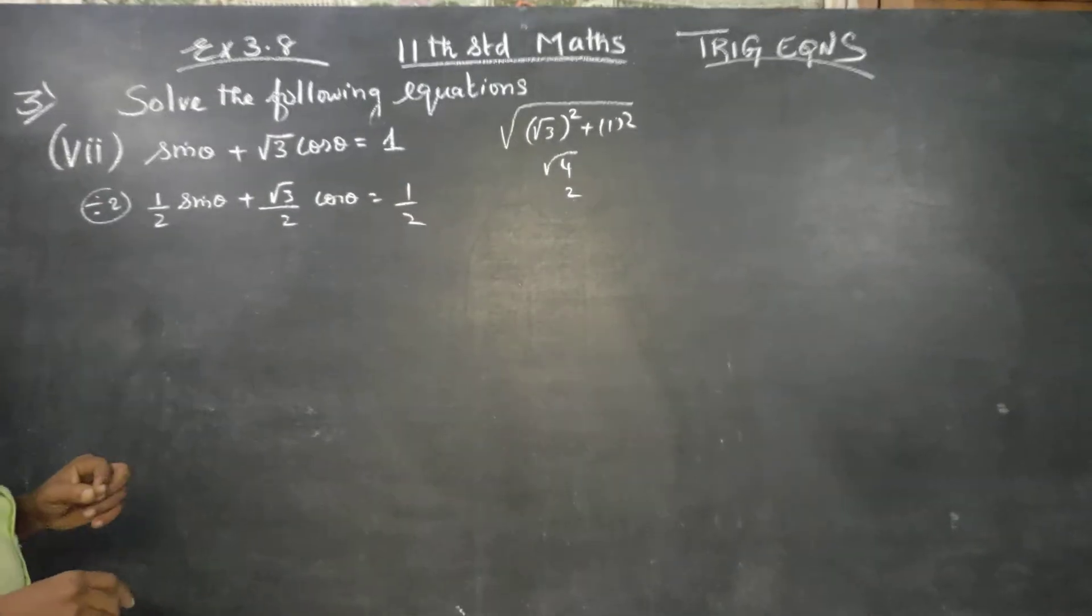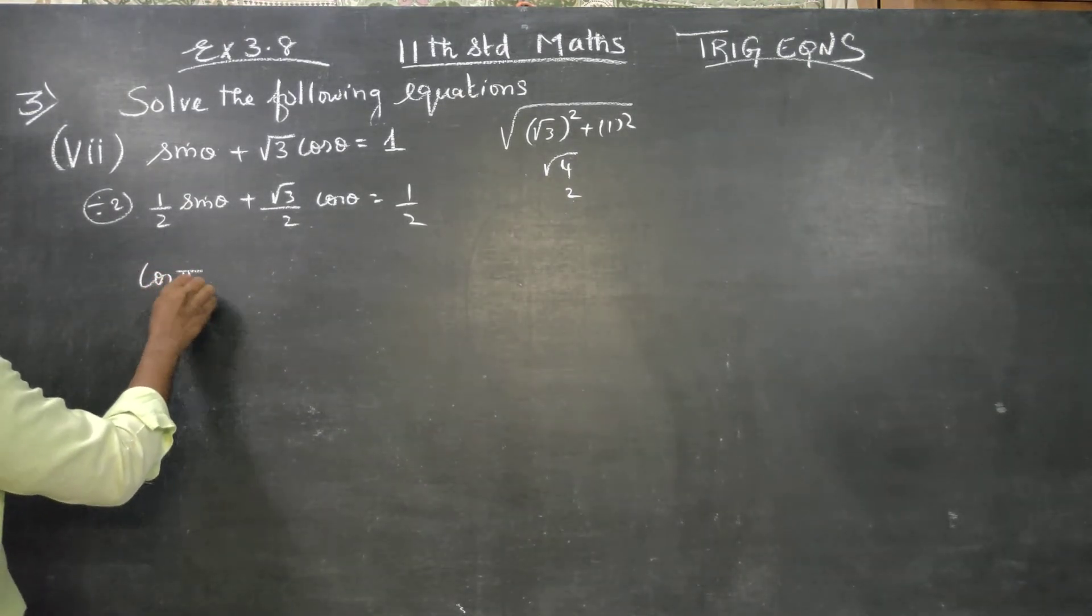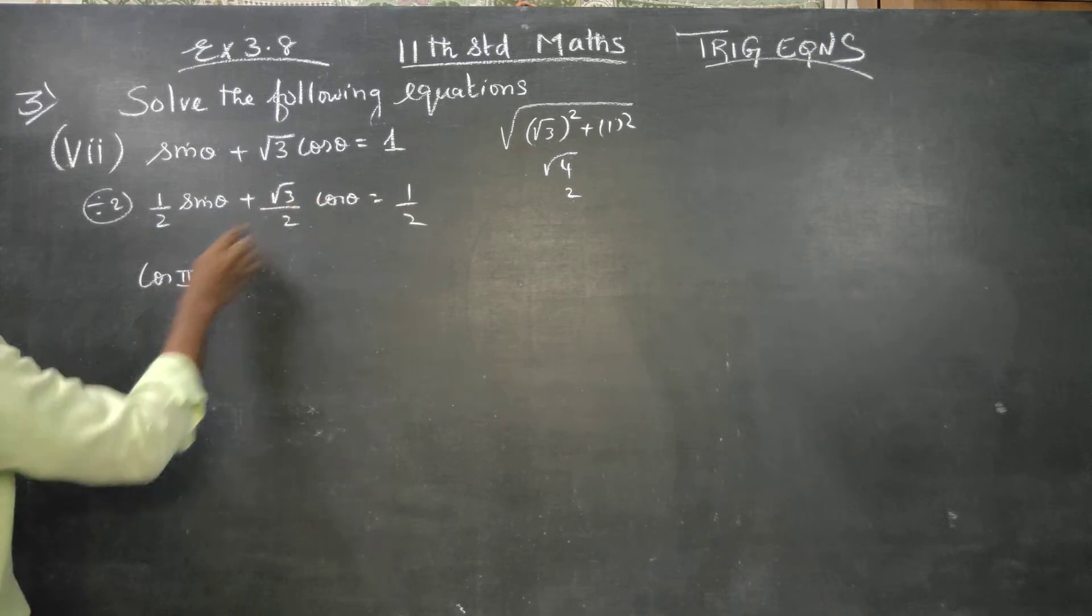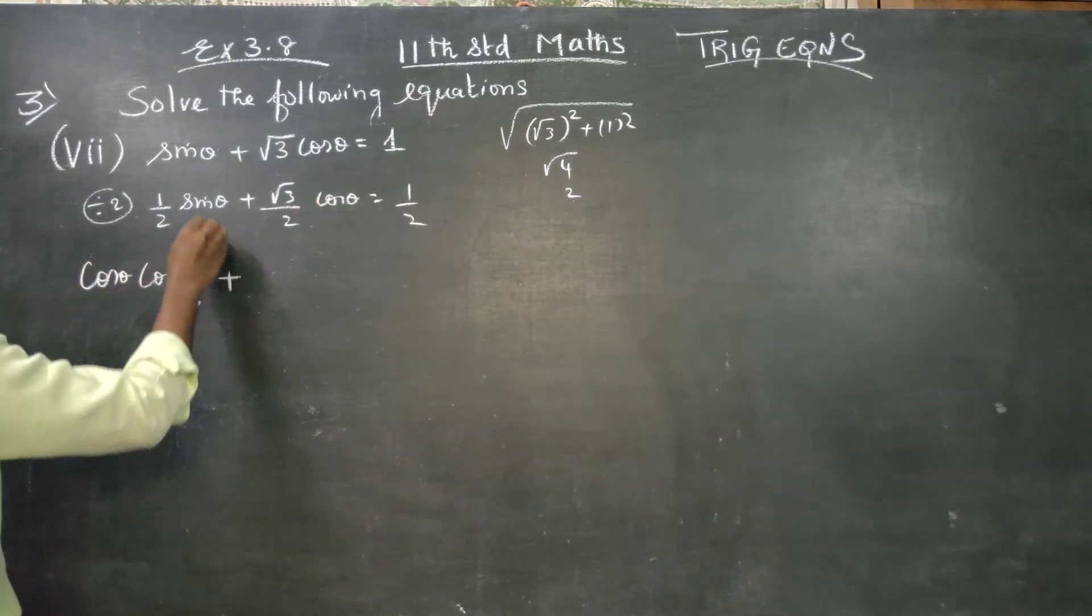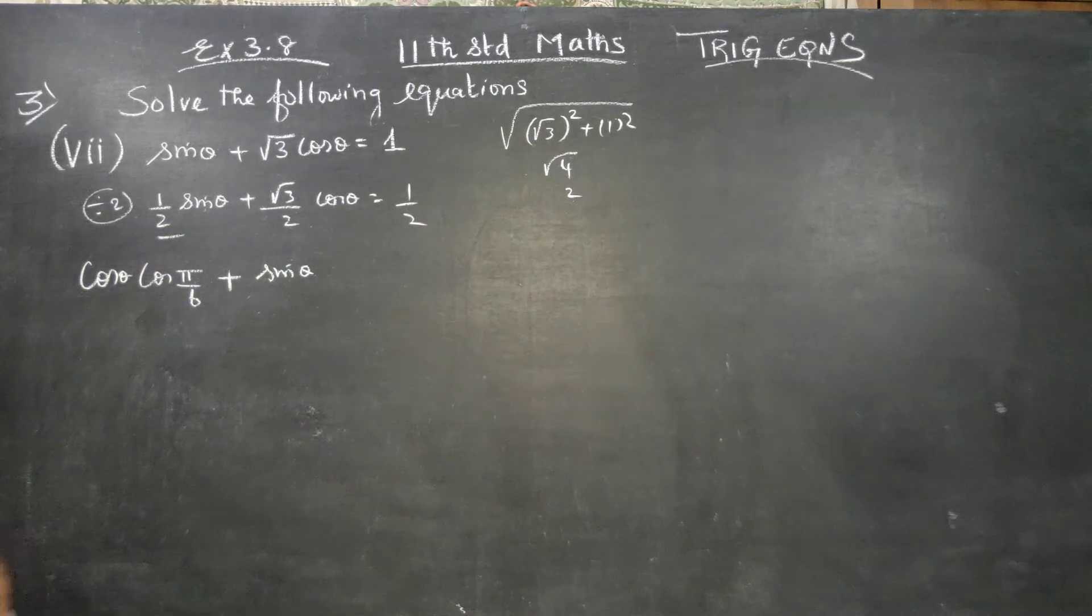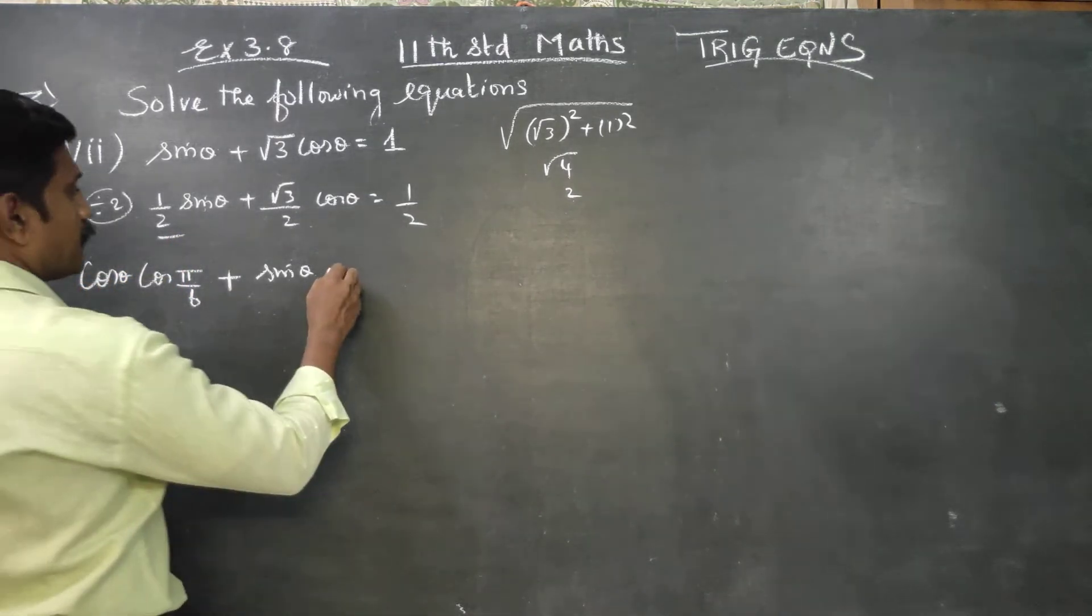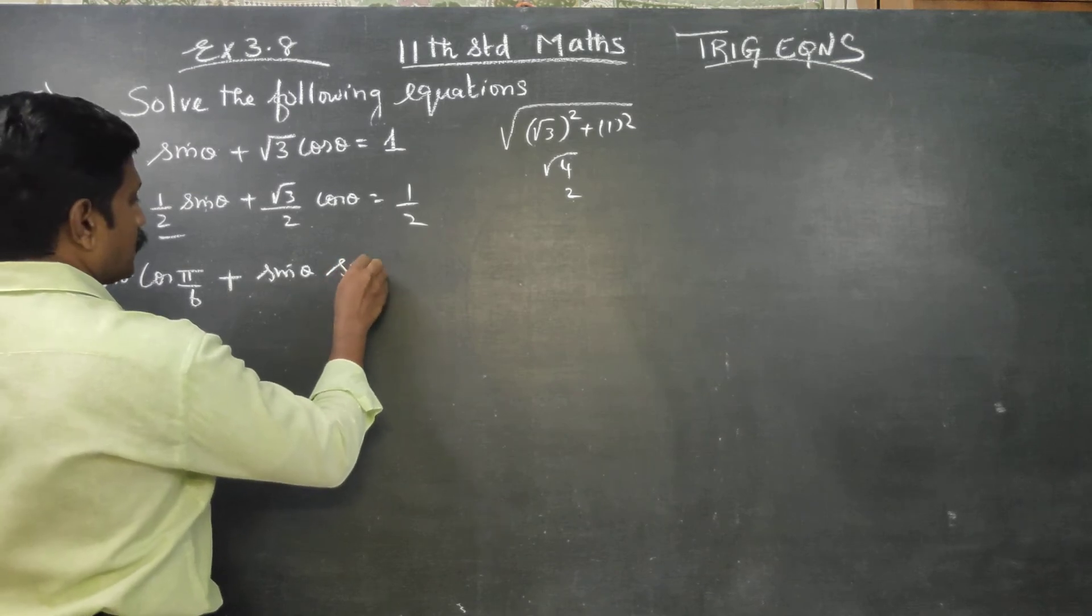This can be root 3 over 2, here is 30 degrees. 30 degrees is cos pi by 6, right? Cos pi by 6, this is cos theta. Cos theta, this is sine theta, one-half, here is one-half, sin 30 degrees. Correcto? Sin 30 degrees, not sin 5 by 6.